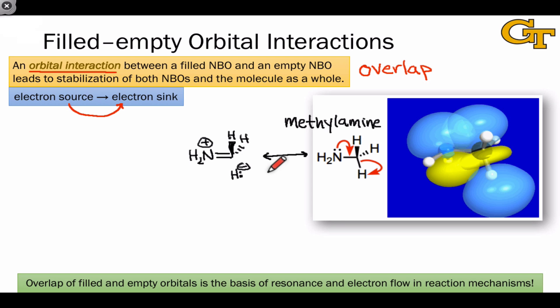Based on the classification scheme we developed earlier to categorize different types of electron flow, we can identify the source here as N, a non-bonding lone pair, and the sink as sigma star, a sigma antibond, since the sigma bond is breaking.